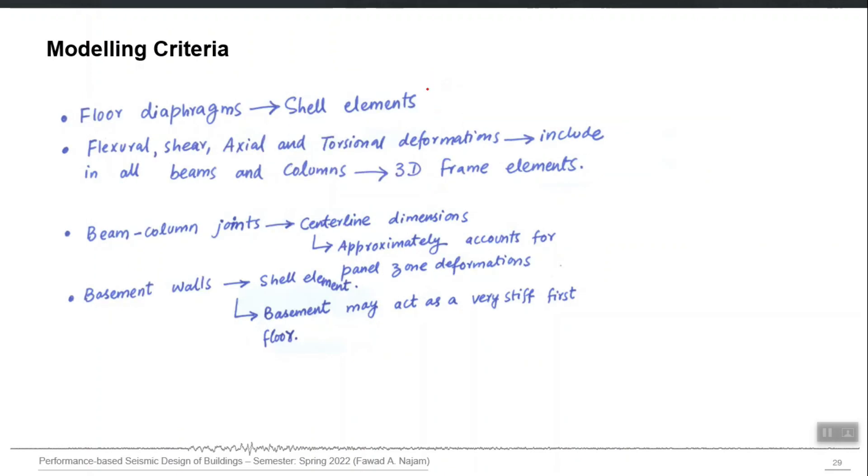Floor diaphragms must be modeled using shell elements. Shell elements can model in-plane and out-of-plane degrees of freedom. Flexural, shear, axial and torsional deformation must be included in the beams and columns, which means that we can use three-dimensional frame element which has six degrees of freedom at each node for modeling beams and columns.